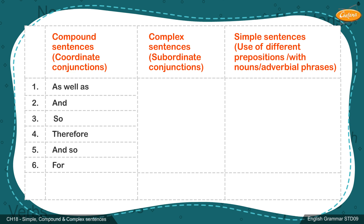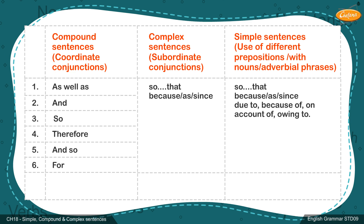Complex sentences — subordinate conjunctions: so that, because, as, since, due to, because of, on account of, owing to.